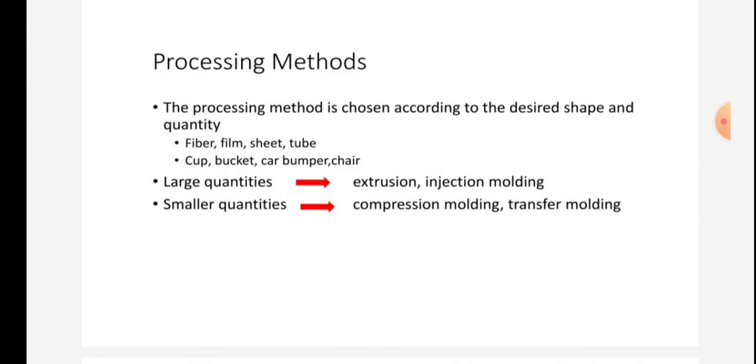Processing methods: the processing method is chosen according to the desired shape and quantity. Fiber, film, sheet, and tube; cup, bucket, car bumper, chair. Large quantities use extrusion and injection molding. Small quantities use compression molding and transfer molding.